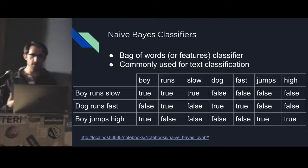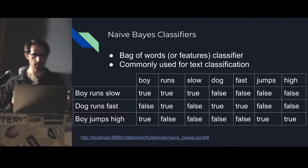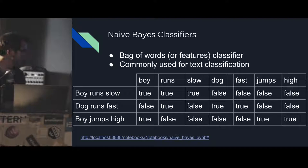So if you look on the left here, we have three short sentences. Boy runs slow, dog runs fast, boy jumps high. We turn that into what's called a Bernoulli representation of that text. So it turns into just a bunch of columns where each column is a word, and the value is now true or false based on whether that word is present in the document.